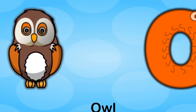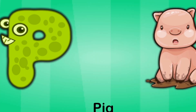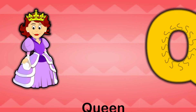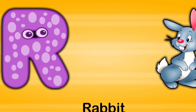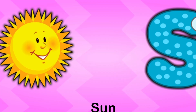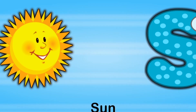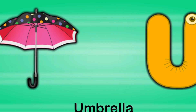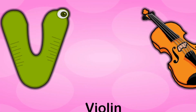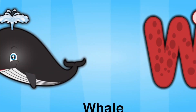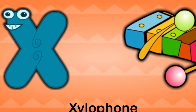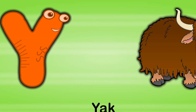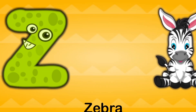O for owl, P for pig, Q for queen, R for rabbit, S for sun, T for train, U for umbrella, V for violin, W for whale, X for xylophone, Y for yak, Z for zebra.